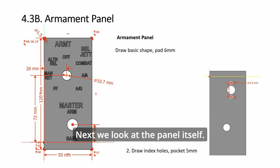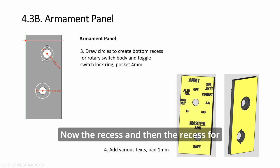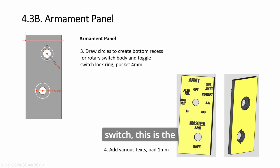Next we look at the panel itself. This one is very simple: two holes at the back for the locking holes and the recess. You flip it over and add some text. This is the recess for the toggle switch, this is the recess for the rotary switch, and then you're done for the panel.